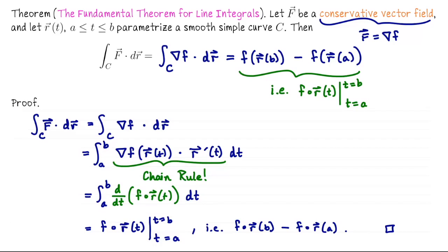This is a really great theorem. Just like the fundamental theorem of calculus allowed us to stop doing Riemann sums with rectangles and start just using anti-derivatives, if we know we're doing a line integral of a conservative vector field and we have a potential function, we can skip the whole process of parametrizing, plugging in, computing the velocity vector, and doing the integration. All we have to do is evaluate our potential function at two points.